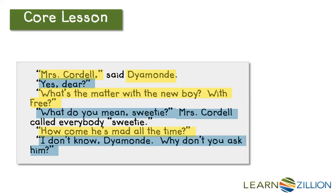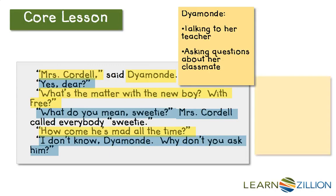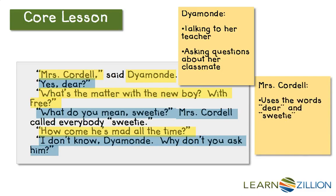Now I'll think about what I notice about each character. I'm going to jot my ideas down on sticky notes to help me remember. So first, let's think about Diamond. I notice she's talking to her teacher, and she's asking questions about her classmates. That tells me that she's thoughtful, because she's wondering about her classmates. Then I notice Mrs. Cordell is using words like 'dear' and 'sweetie,' and she's talking to her student. I know Mrs. Cordell is an adult because it says 'Mrs.,' and I remember that she's Diamond's teacher. I know she cares a lot about her students because she uses words like 'dear' and 'sweetie.' Now I need to re-read this passage and match my voice to the characters using what I know about them.